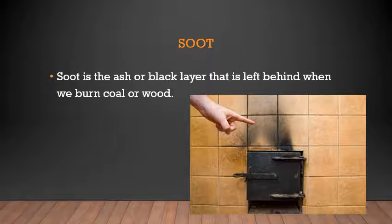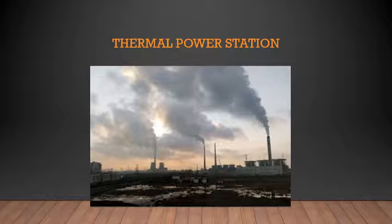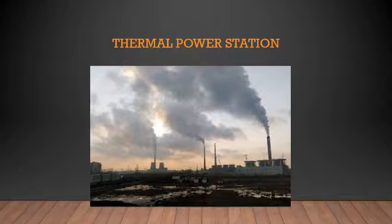The last effect is smog or soot. First, what is soot? Soot is the ash or the black layer that is left behind when we burn coal or wood. When we burn anything, there will be a black layer of smoke left behind. If you have seen a thermal power station, there is a lot of coal ash in the air. This coal ash, when we breathe it, also harms our lungs.